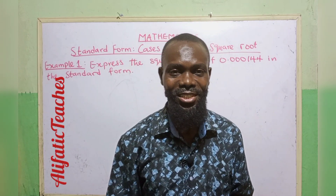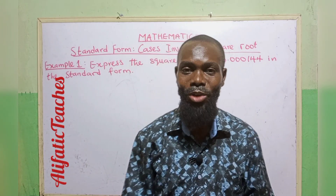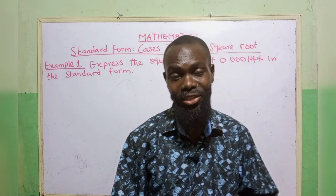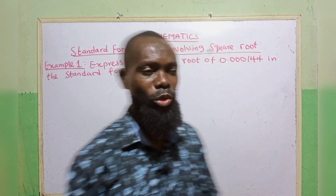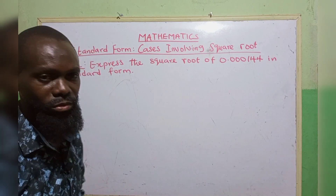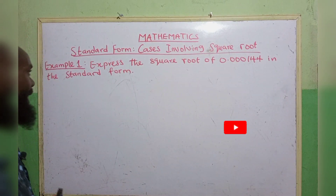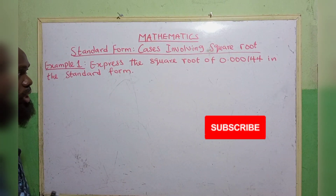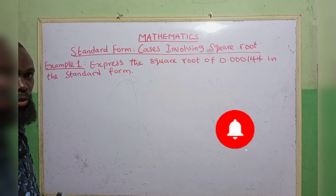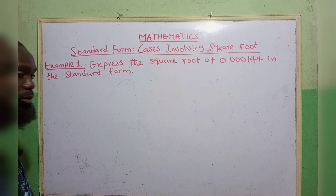Good day viewers. Today's mathematics class, we are going to be looking at the conclusion of our standard form. Today we want to look at the cases involving square roots. Example 1: express the square root of 0.000144 in standard form.